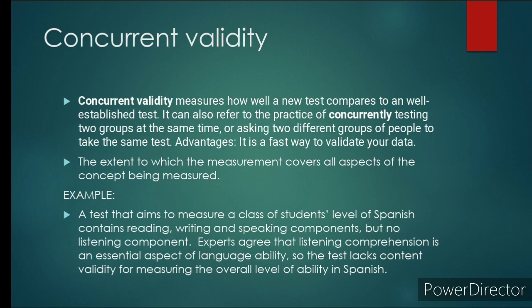Concurrent validity measures how well a new test compares to one well-established test. It can also refer to the practice of concurrently testing two groups at the same time or asking two different groups of people to take the same test.